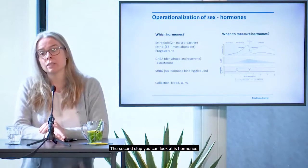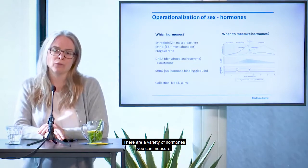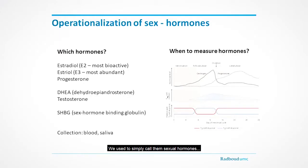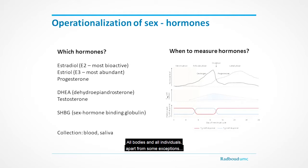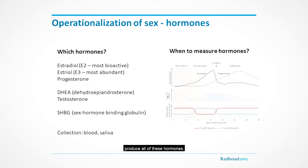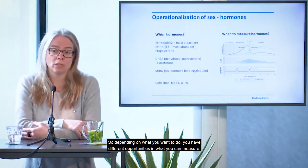The second step you can look at are hormones. There is a variety of hormones you can measure. We used to simply call them sexual hormones, assuming females have estrogens and males have androgens. But from a broader perspective, all bodies and all individuals, apart from some exceptions, produce all of these hormones — just in different concentrations, at different times, and to different degrees.